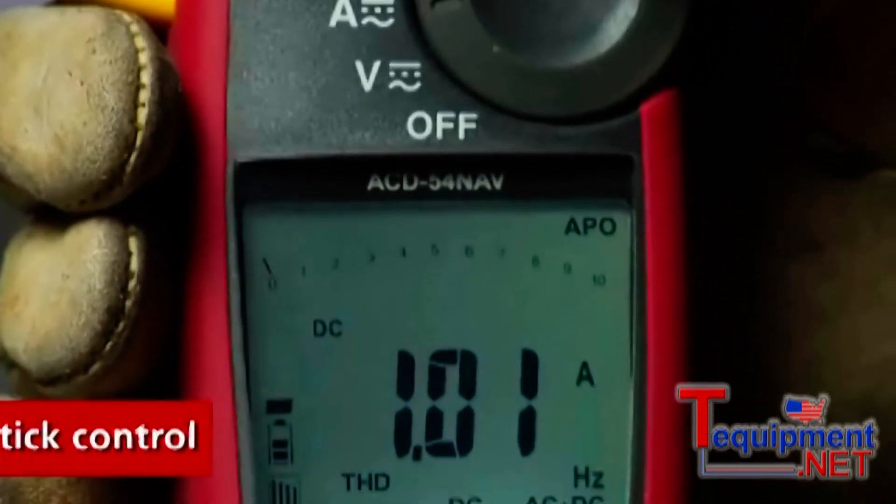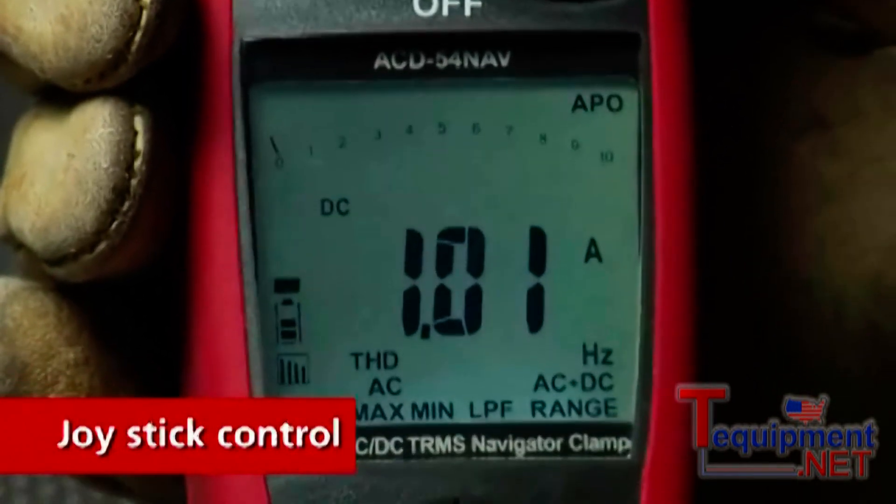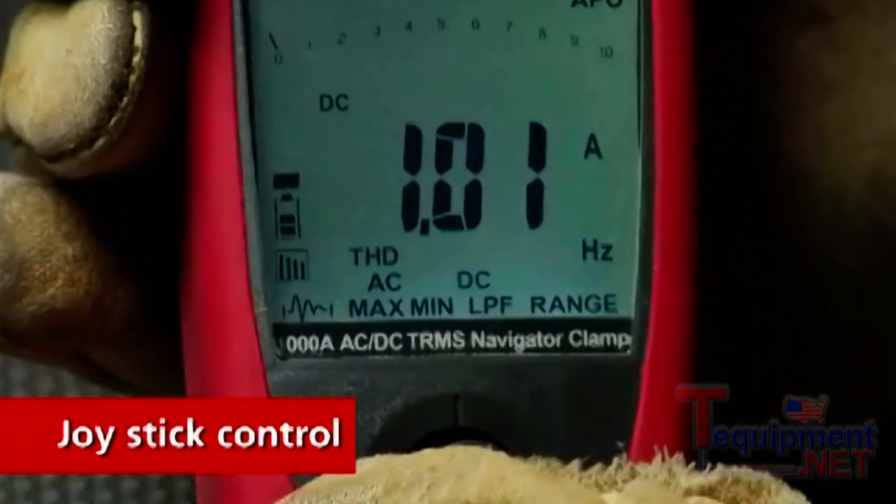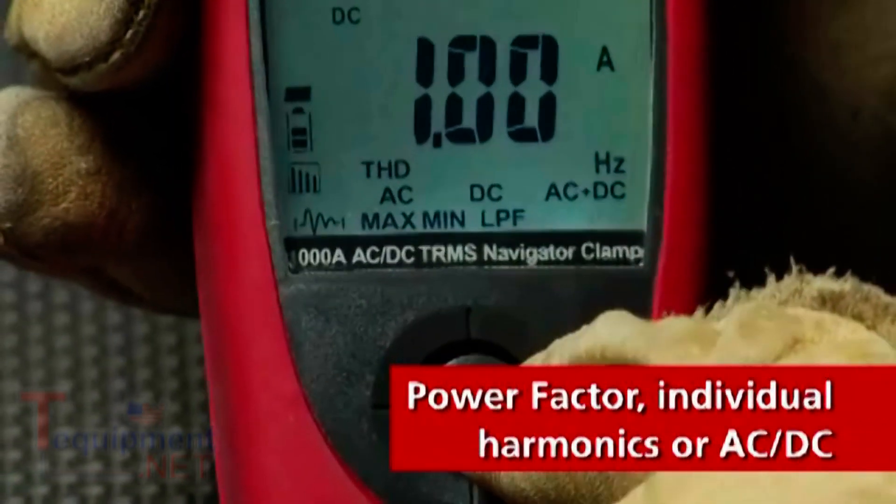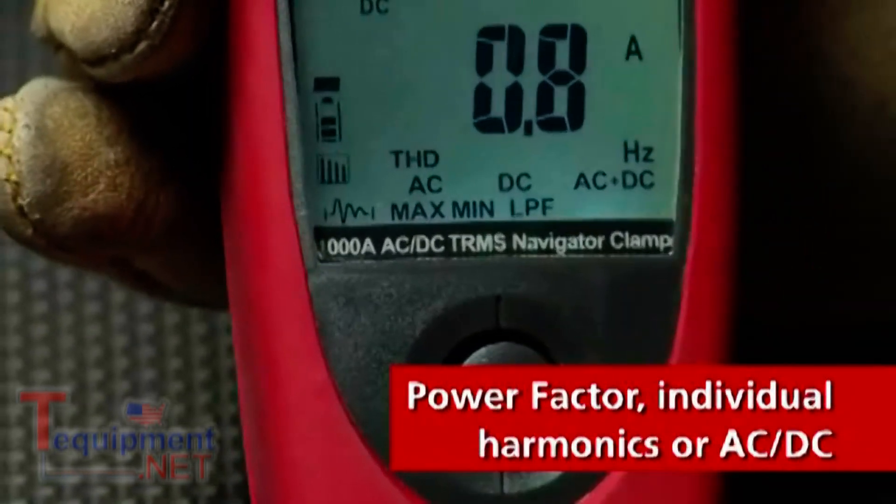Amprobe's Navigator Clamp Meters feature single-handed selection with a joystick control that makes it easy to choose between multiple measurements like power factor, individual harmonics, or AC-DC.